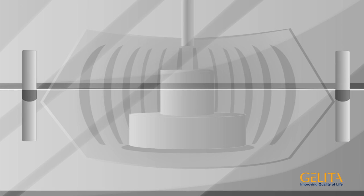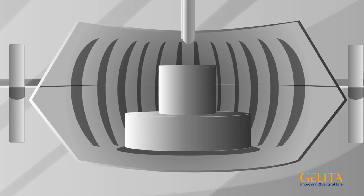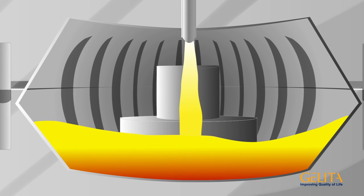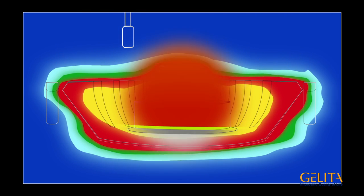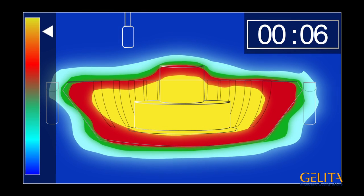During the die casting of non-ferrous metals, any contact between the hot liquid molten bath and the steel casting mold needs to be avoided. In addition, the mold must be cooled quickly after each casting.